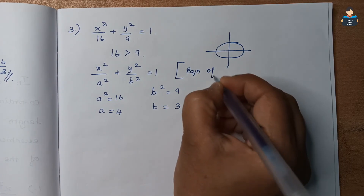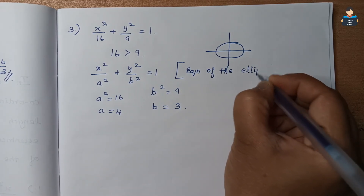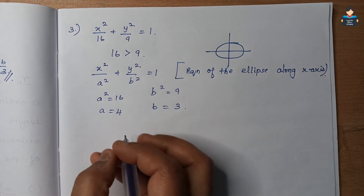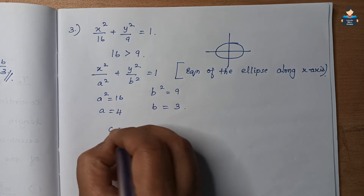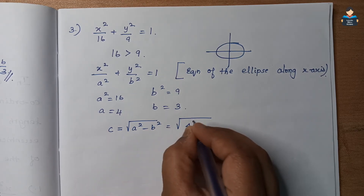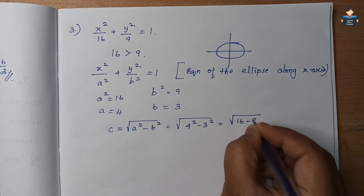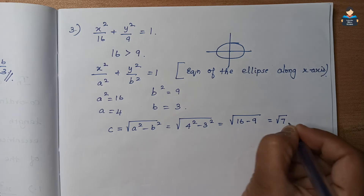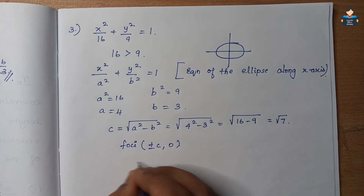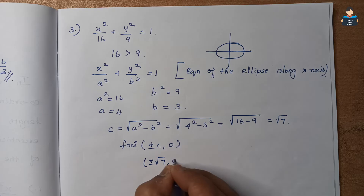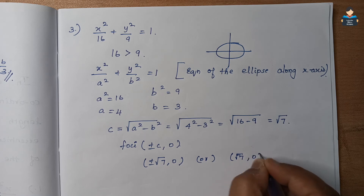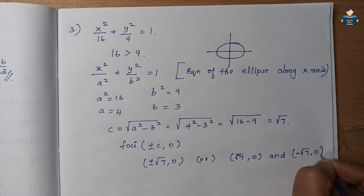The equation of the ellipse is along the x-axis. Finding c: c = √(a² − b²) = √(16 − 9) = √7. The foci are at (±√7, 0). Major axis is the x-axis and minor axis is the y-axis.